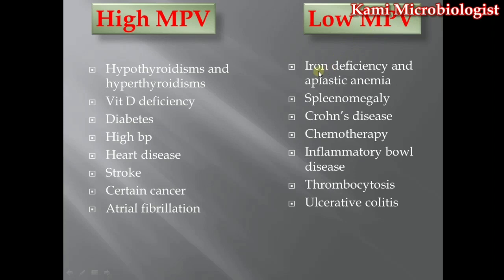Now for low MPV: it is caused by iron deficiency anemia and aplastic anemia. Iron deficiency anemia means there is a low level of iron, causing red blood cells to get destroyed and decrease. Aplastic anemia means there is not enough RBC production. In these cases MPV gets low because low RBCs lead to low platelets. Splenomegaly — an enlarged spleen — stores a larger volume of blood, which causes a low mean platelet volume in the bloodstream.